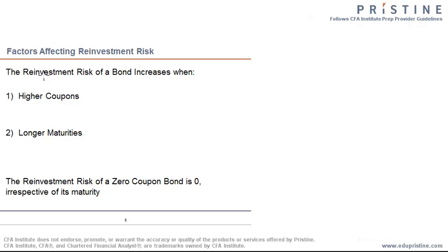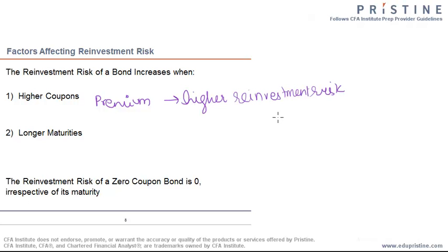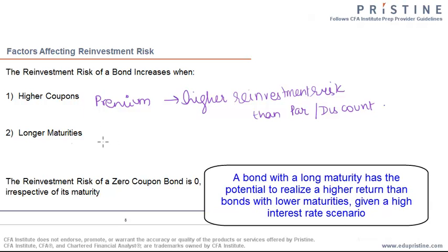Now, there are two important factors that affect the reinvestment risk of a bond. First, reinvestment risk increases when the coupons are higher — meaning bonds trading at a premium would have higher reinvestment risk than those trading at par or a discount. Second, longer maturities — for a coupon bond with a long tenure, the realized yield could be much higher than the YTM if you can reinvest at higher interest rates, compared to a bond with lower maturity.